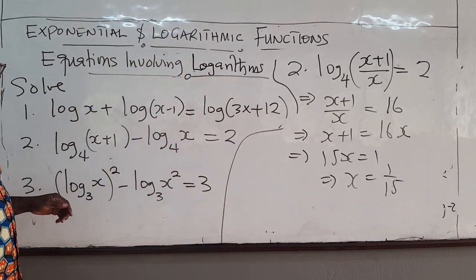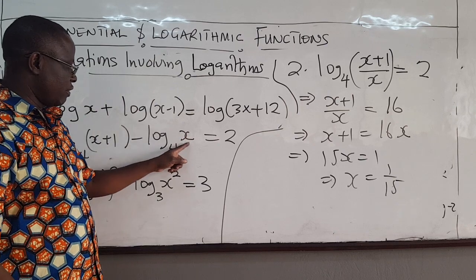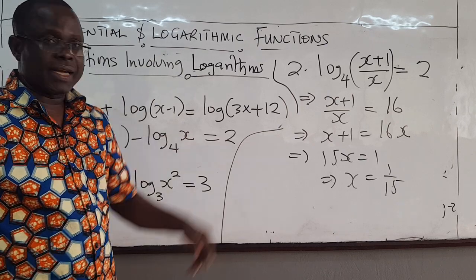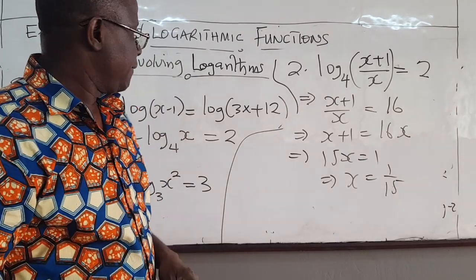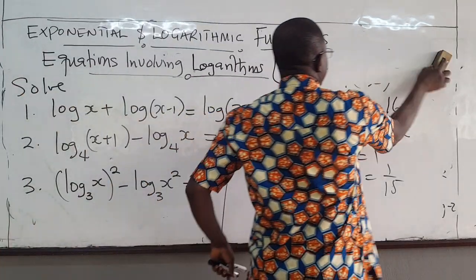You'll go back to the original equation. 1 over 15 here will be defined, and 1 over 15 there is defined, so that is the solution. Let's look at the last one.